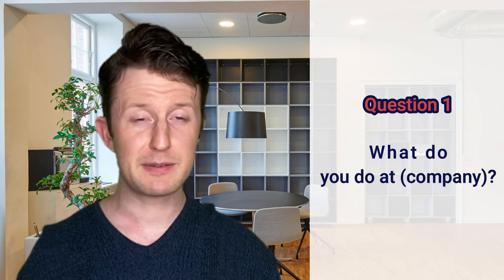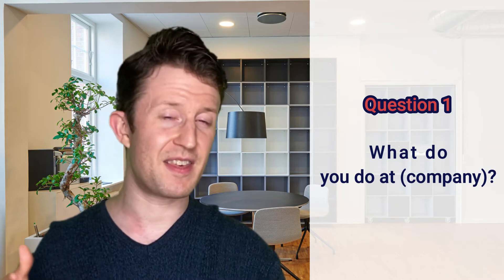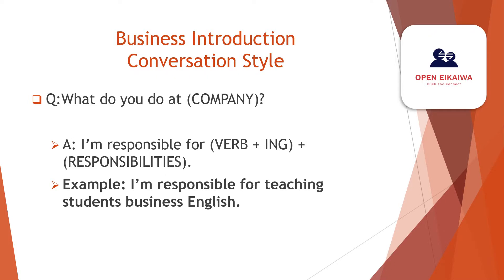The first common question when meeting someone for the first time is: what do you do at [company name]? Usually people will already know a little bit about what you do, but they may want to know more about your responsibilities. To answer this, you can say: I'm responsible for [verb + ing + your responsibilities]. For example: I'm responsible for teaching English to my students. Here, teaching is the verb and my responsibility is to teach my students English.